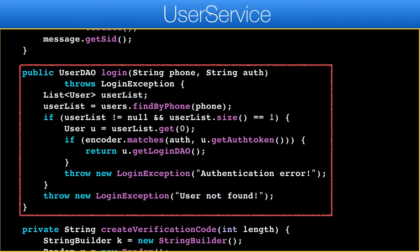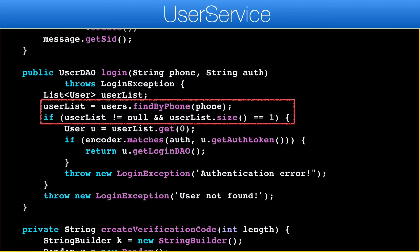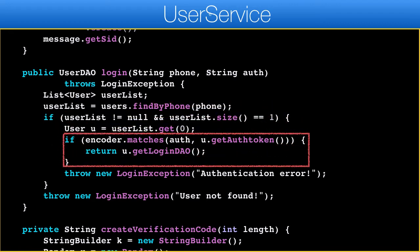The login API lets us validate a user and get the current data the server has for that user. Since there is no username/password, we need to use the token to authenticate. First we need to find the user with the given phone. Assuming the user isn't there we'll throw an exception. Since the auth is hashed, as we discussed before, we need to test the incoming auth via the matches method in the encoder. It verifies the hash matches the auth token.